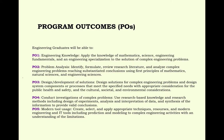Program Outcomes: PO1 Engineering Knowledge — apply the knowledge of mathematics, science, engineering fundamentals, and an engineering specialization to the solution of complex engineering problems. PO2 Problem Analysis — identify, formulate, review, research literature and analyze complex engineering problems, reaching sustained conclusions using first principles of mathematics, natural sciences and engineering sciences.